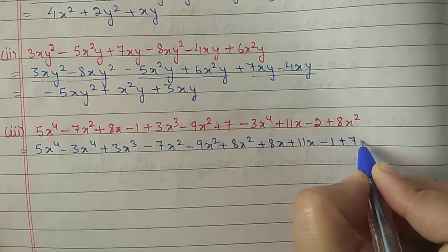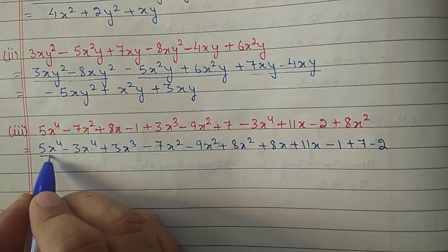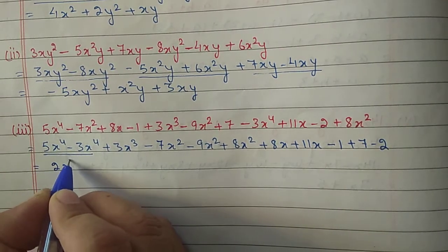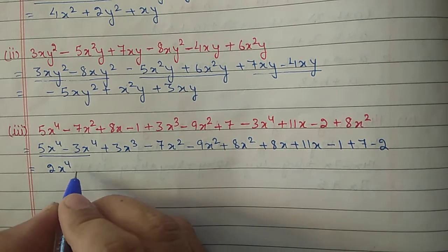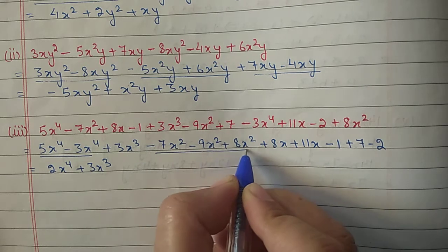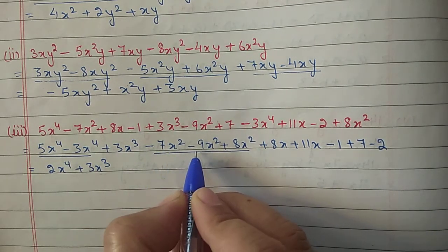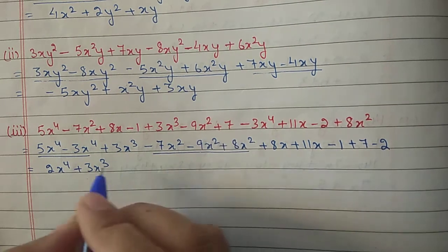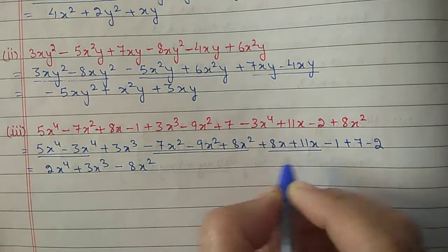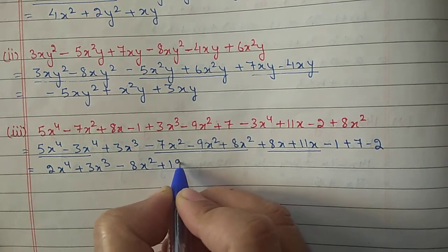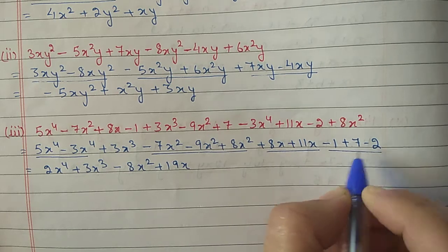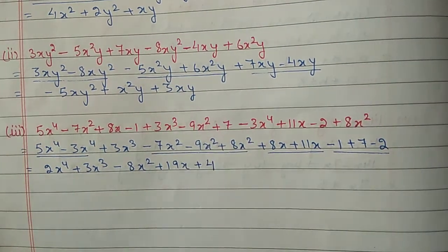Simplifying: 5 minus 3 gives 2x to the power 4; x cube only has 1 so write as it is; minus 7 minus 9 is minus 16, minus 16 plus 8 is minus 8x square; 8x plus 11x gives 19x; minus 1 plus 7 is 6, 6 minus 2 is 4. Answer: 2x⁴ plus x³ minus 8x² plus 19x plus 4.